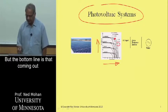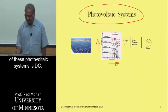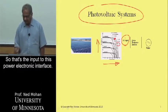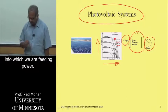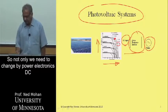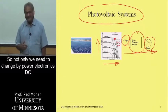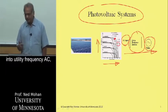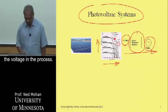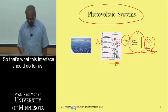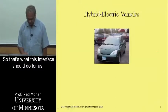The bottom line is that coming out of these photovoltaic systems is a DC output. That is the input to this power electronic interface, and the output is the utility into which we are feeding power. So not only do we need to convert DC into utility-frequency AC through power electronics, but we may also need to boost up the voltage in the process — that's what this interface should do for us.